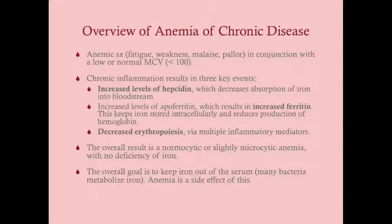Critically, ferritin is not decreased in anemia of chronic disease — you will not have decreased ferritin or decreased serum iron. Decreased ferritin and decreased serum iron would indicate iron deficiency anemia, the number one cause of anemia. Normal or increased ferritin with normal serum iron is associated with anemia of chronic disease, which occurs alongside chronic conditions like lupus, cancer, or rheumatoid arthritis.